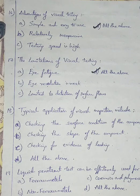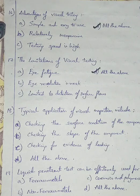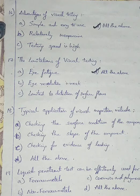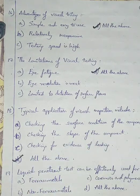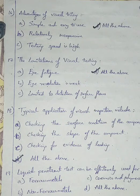Question number 18. Typical applications of visual inspection include: Option A checking the surface condition of the component, Option B checking the shape of the component, Option C checking for evidence of leaking, Option D all the above. All three applications come under visual inspection. So I am going with option number D, all the above.